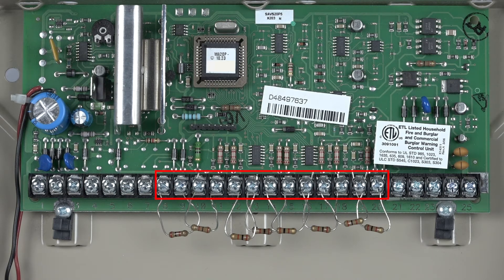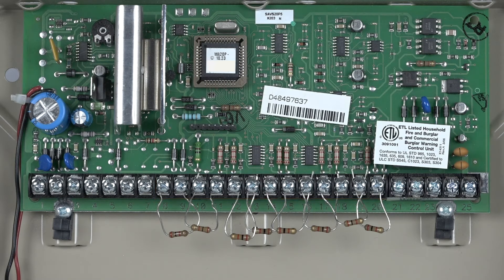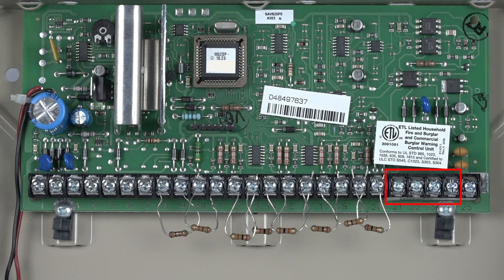Terminals 8 through 20 are your zone terminals. It is recommended to strap out these zones with 2K resistors if you are not using the zones since these have program values by default. Terminals 21 through 24 are for a phone line connection and Terminal 25 is an earth ground.